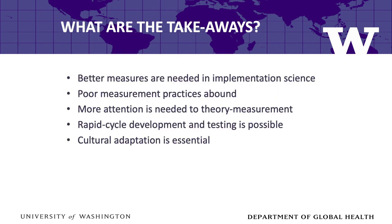Let me conclude with five takeaways. First, better measures are needed in implementation science—without a stronger measurement foundation, we risk building implementation science on shifting and unstable ground. Second, poor measurement practices abound; we need researchers who develop measures to follow best practices, and we need better users of measures—there is widespread misuse of Cronbach's alpha. Third, we need more attention to theory in measurement, as theory plays a critical role in defining latent constructs and differentiating them from related constructs. Fourth, rapid cycle development and testing is possible, as demonstrated in our 18-month process. And finally, cultural adaptation is essential as implementation science crosses countries and cultures. Thank you.